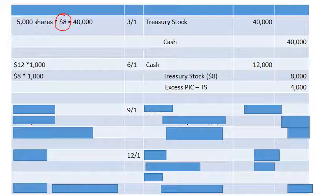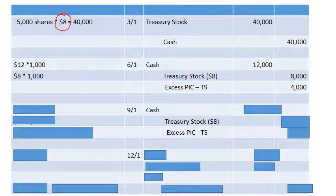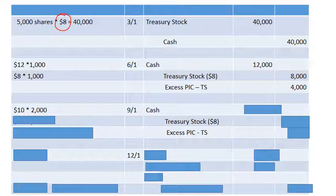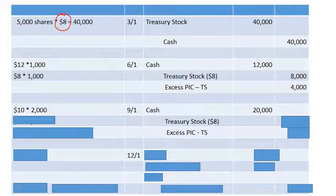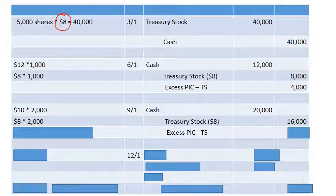On September 1st, we're selling 2,000 shares at $10 a share. Again, we receive cash and give up treasury stock at $8. We're getting $10 for 2,000 shares — cash is $20,000, treasury stock is $8 times 2,000 equals $16,000, and the excess paid-in capital for treasury stock is $4,000.